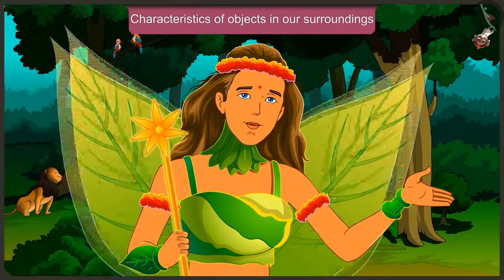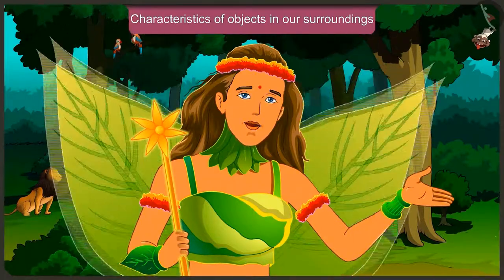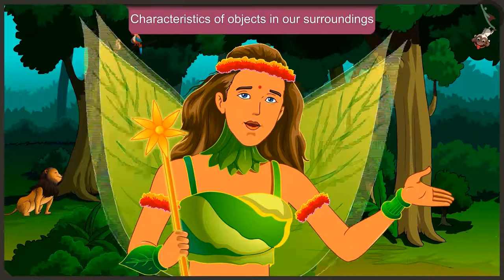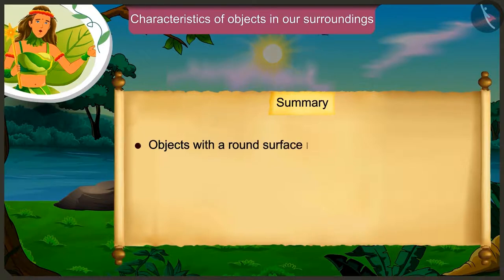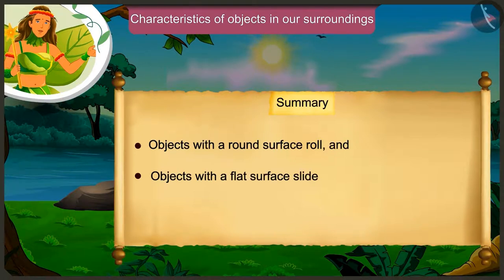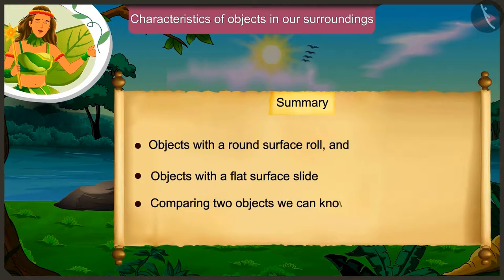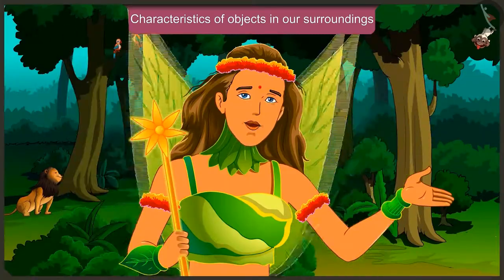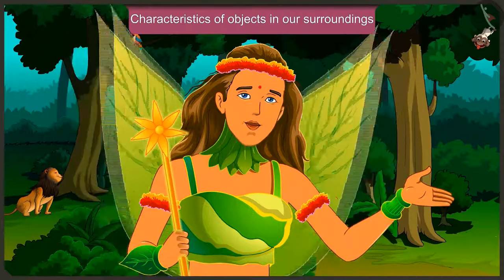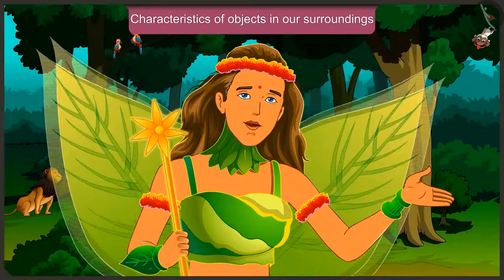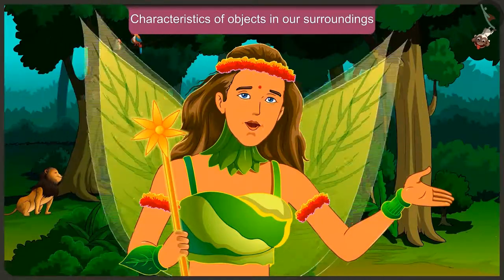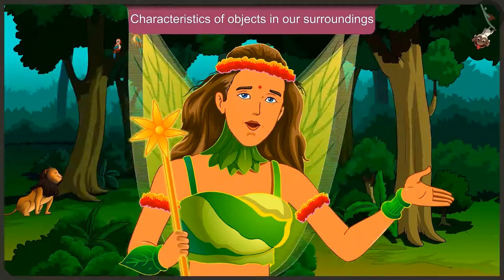Through Appu and Jaggu's conversation, we came to know such things about the objects around us: objects with a round surface can roll, and objects with a flat surface slide. By comparing two objects, we can find out about their length. You must also try to see such characteristics in the objects around you. In the next video, we will understand the characteristics of the objects around us with some more examples.